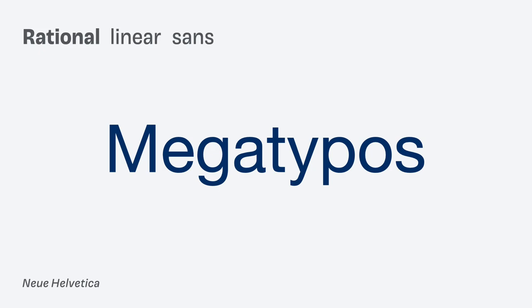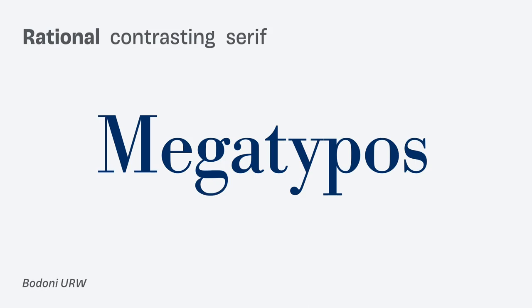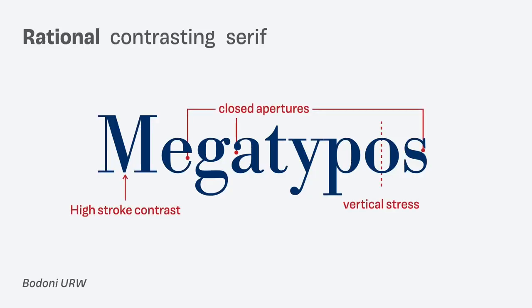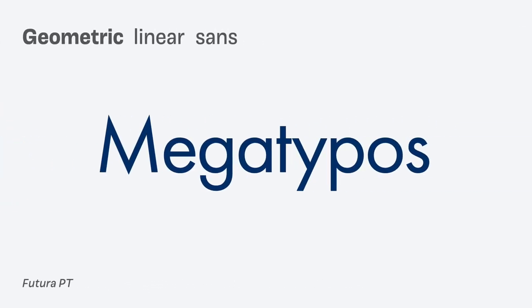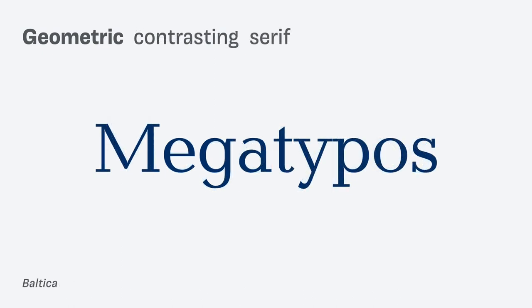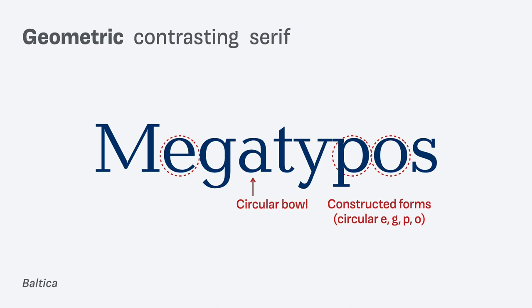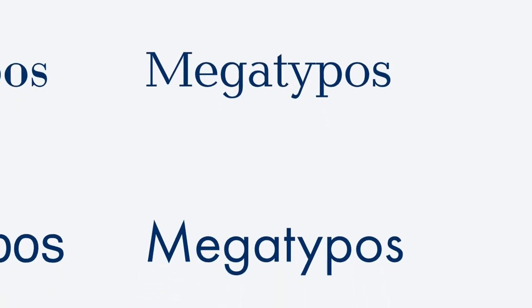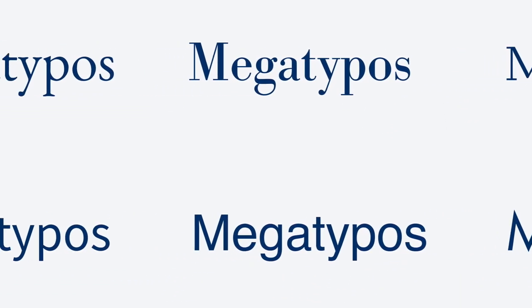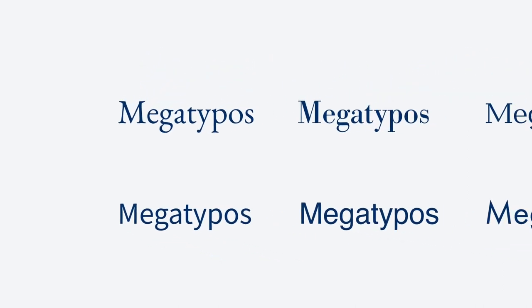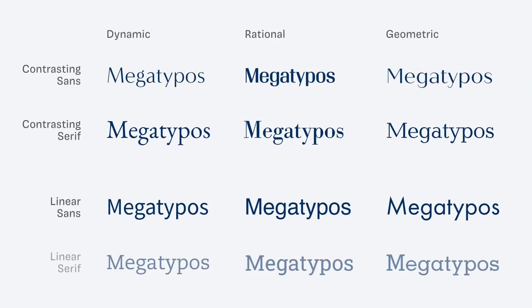Moving to our rational sans serif — Helvetica — and adding contrast and serifs, what we get is Bodoni. The form model is still closed and strict, and the contrast is very extreme and high. But from the bare bones, it's the same typeface. When we take our geometric linear sans serif and add contrast and serifs, we get something that seems different but is still geometric. Now everything starts to align, and moving from geometric to rational to dynamic, you can see how the font matrix appears in front of your eyes.